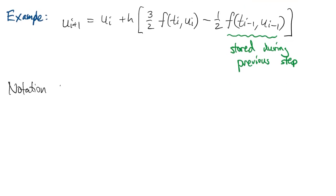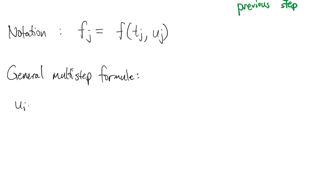Some notation here to make things easier: f sub j means f at time tj and value uj. With that notation, a general multi-step formula looks like this. ui plus 1 is a combination of ui and on back to ui minus k plus 1, k is some positive integer, plus h times a combination of f values at those same time levels.